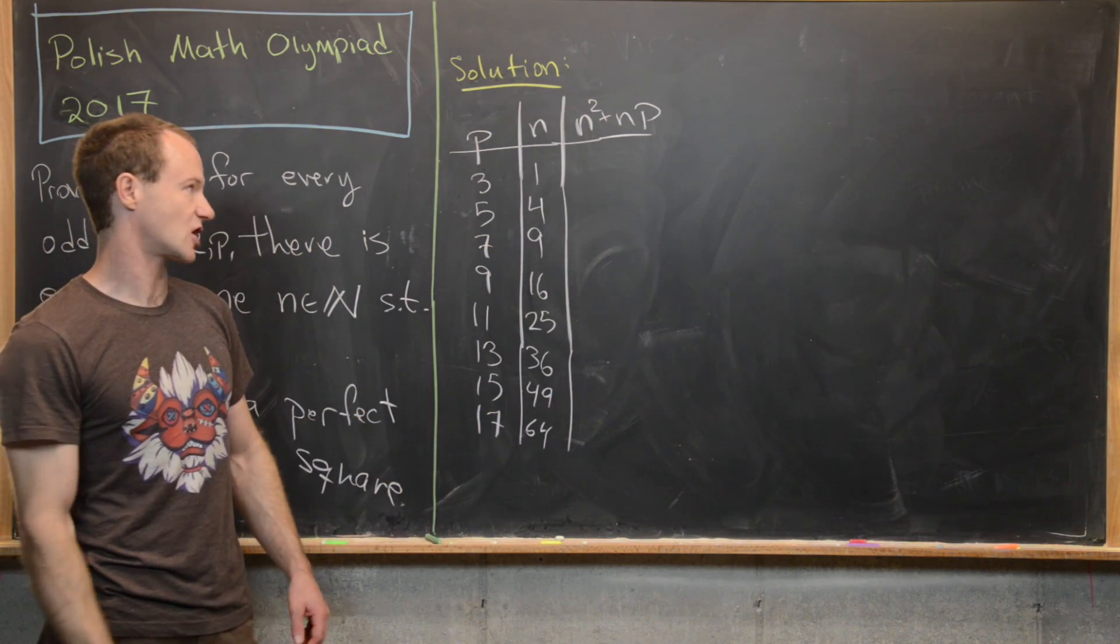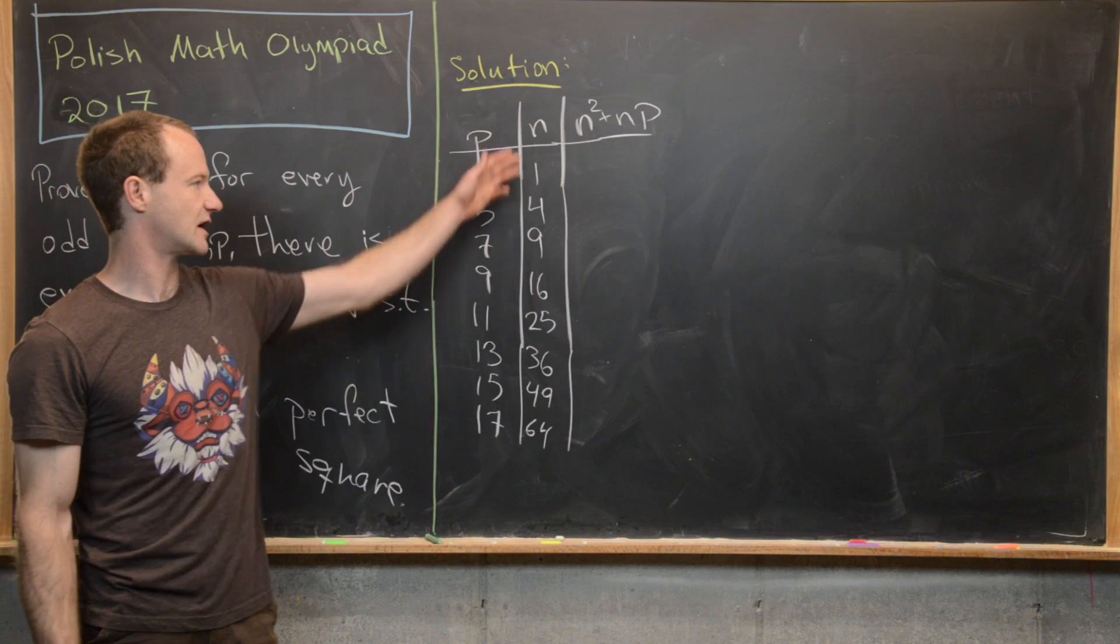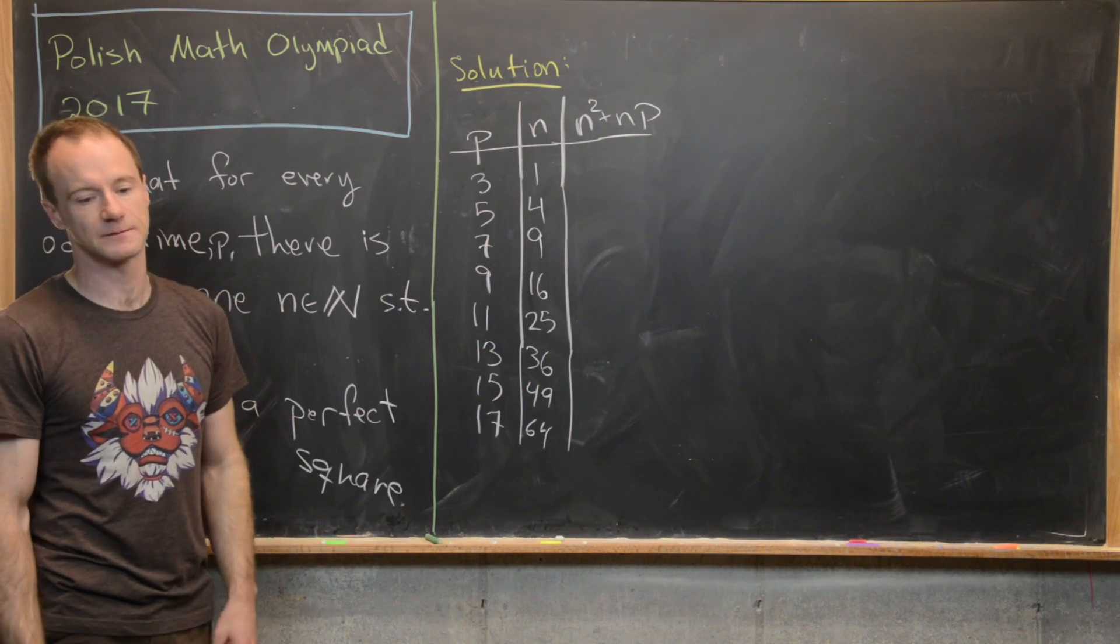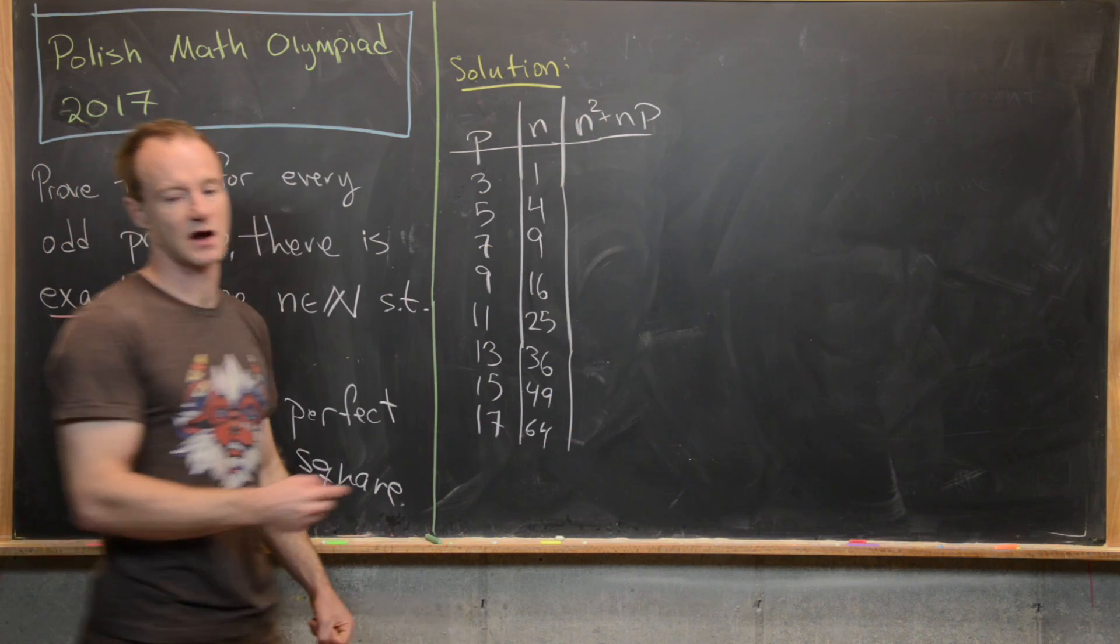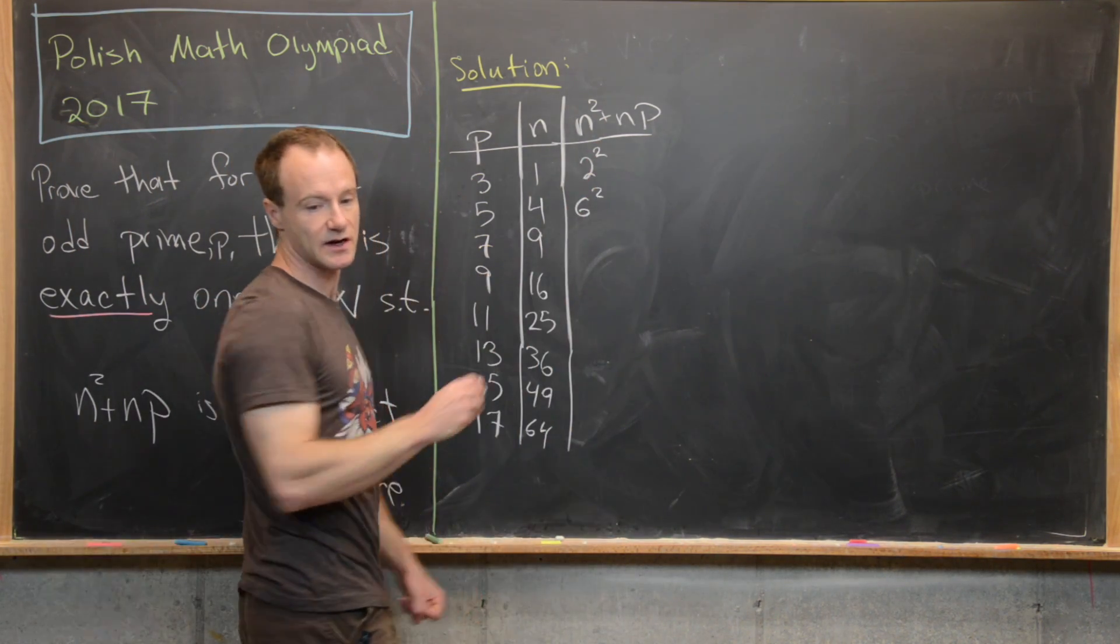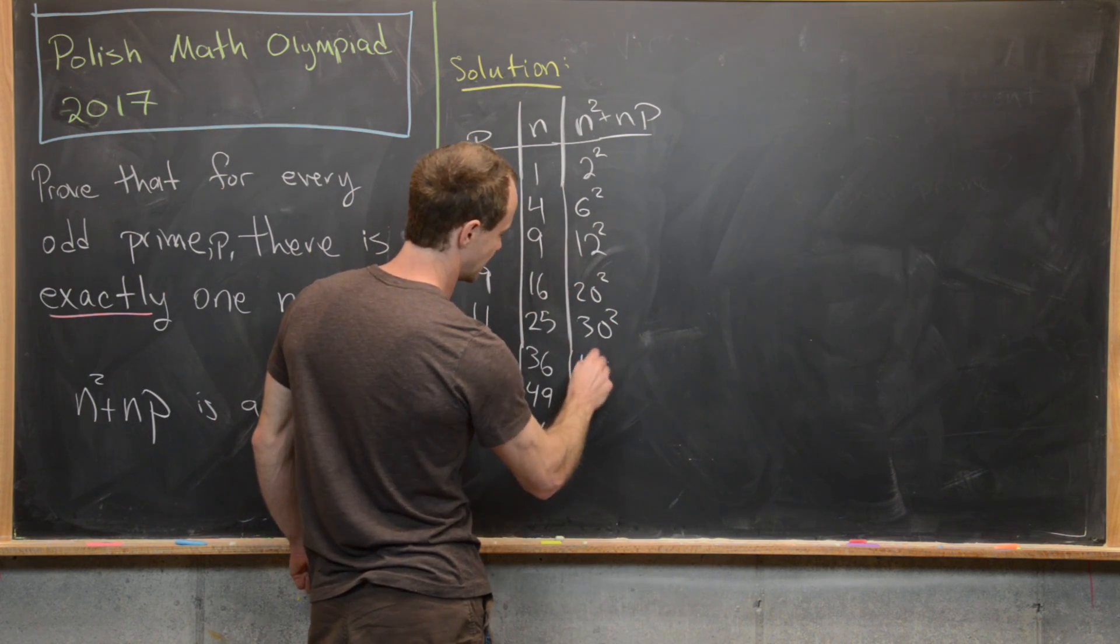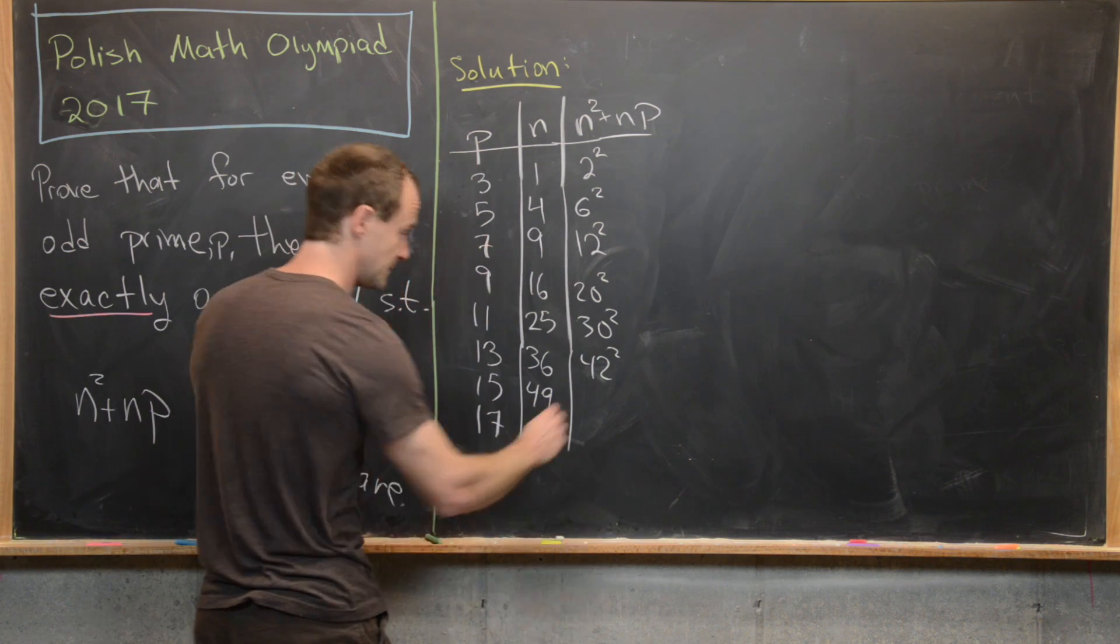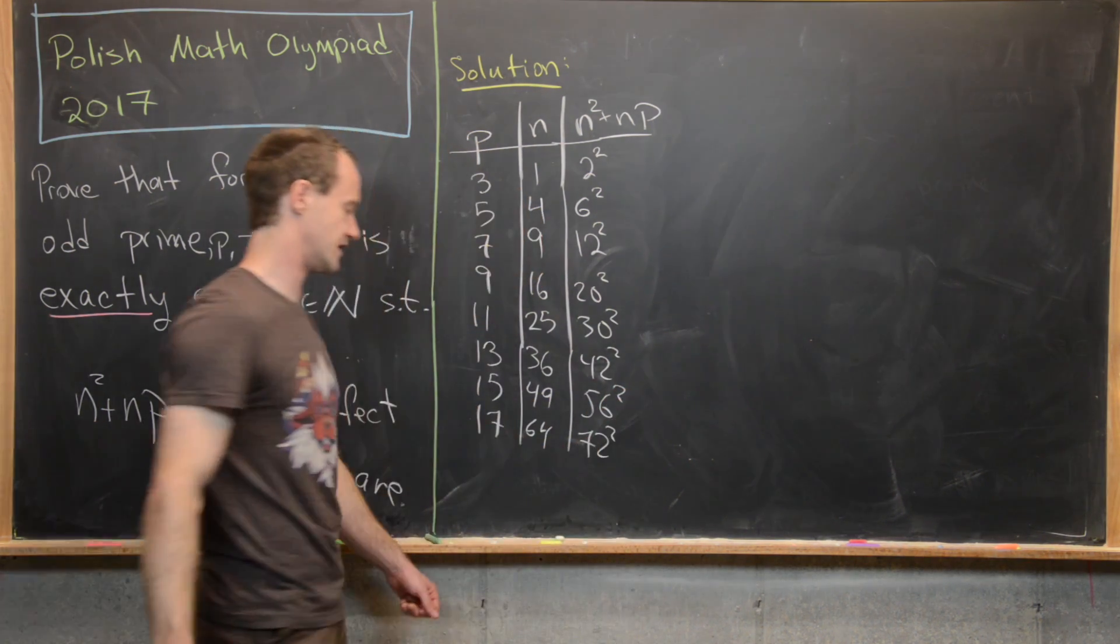So I think it's pretty easy to see the structure. Notice we've got consecutive odd numbers here and consecutive square numbers here. And then by calculation we can find this right-hand column and we'll see that we have 2 squared, 6 squared, 12 squared, 20 squared, 30 squared, 42 squared, 56 squared, and 72 squared.